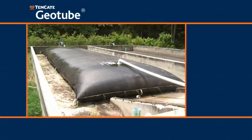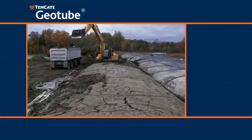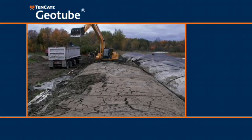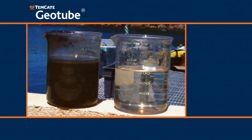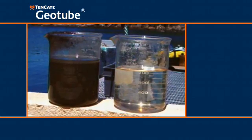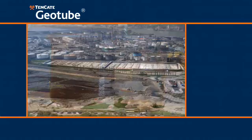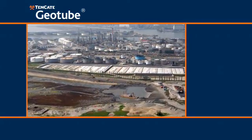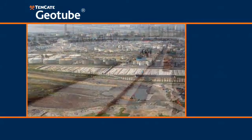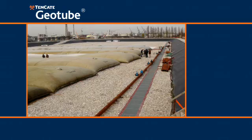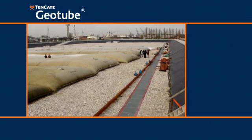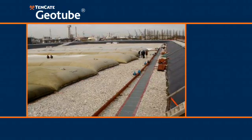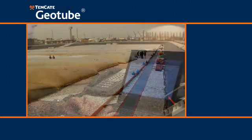In dewatering projects, Tenkata Geotube containers reduce carbon emissions by diminishing the number of trips to approved landfills by reducing the volume of the sludge. Also, energy consumption during the actual dewatering of sludge is considerably lower using Tenkata Geotube solutions than when dewatering is carried out using mechanical systems.